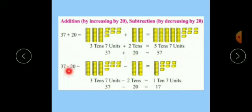Similarly, 37 minus 20. Here we have to take off 20, take out 20. So 37 minus 20, first we will take out 10. So 37 minus 10 is 27, and 27 minus 10 is 17. So the answer is 17.